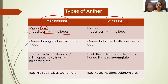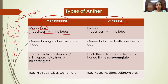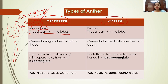In a monothecal anther, only one lobe is present, and inside this lobe a cavity is present. Inside this cavity there are actually two pollen sacs or two microsporangia. So in a monothecal anther, there are two microsporangia present inside the cavity or inside the theca. These microsporangia help in the formation of pollen grains.